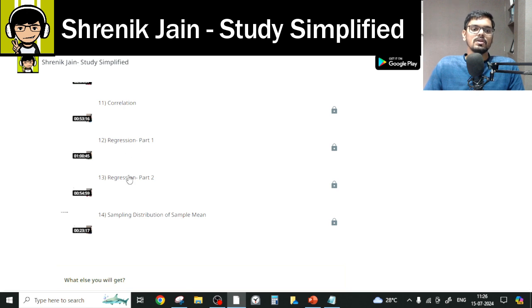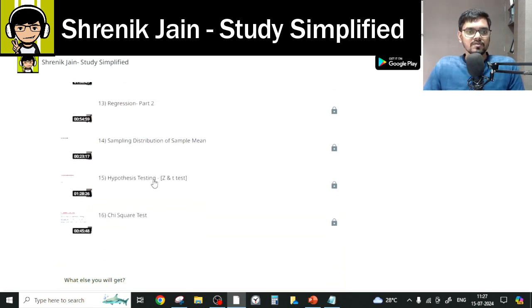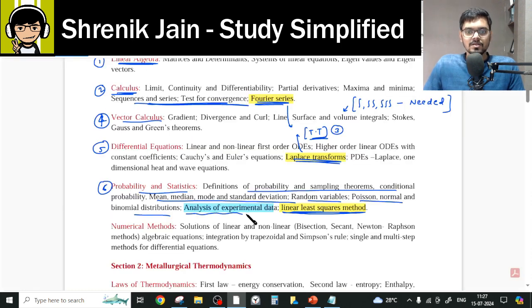So 11, 12, 13 lecture you have to watch. What about the sampling distribution of sample means, hypothesis testing, z and t test, chi square test? This is also there because analysis of experimental data means those topics indirectly. So I hope you got the idea. Probability and Statistics, each and every lecture you have to watch. Nothing can be skipped.